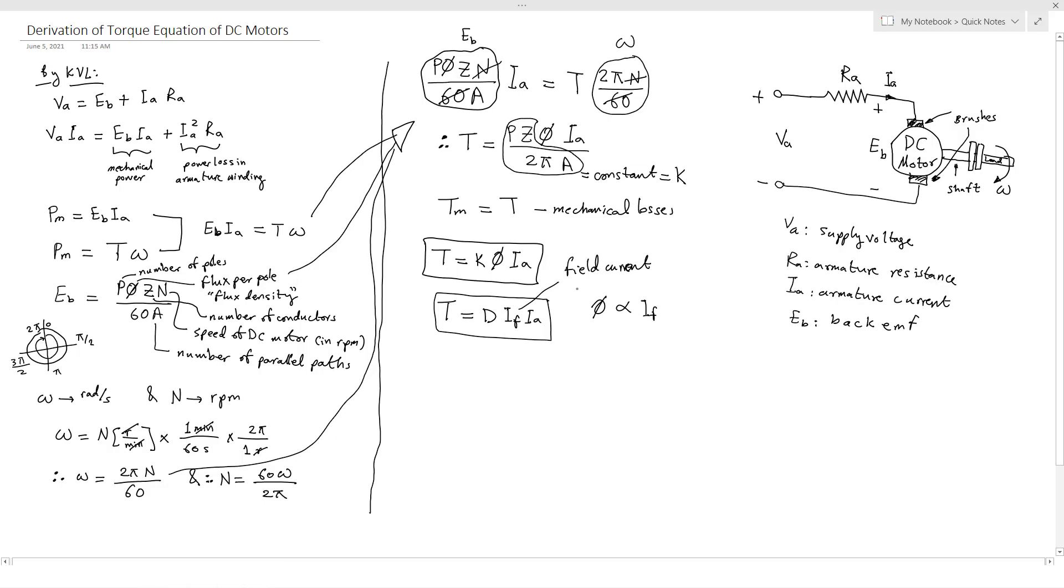The other most important equation is EB when it is represented as a function of flux and omega. So how to find it? We know that EB equals P phi Z N over 60 A, and we know that omega equals 2 pi N over 60.